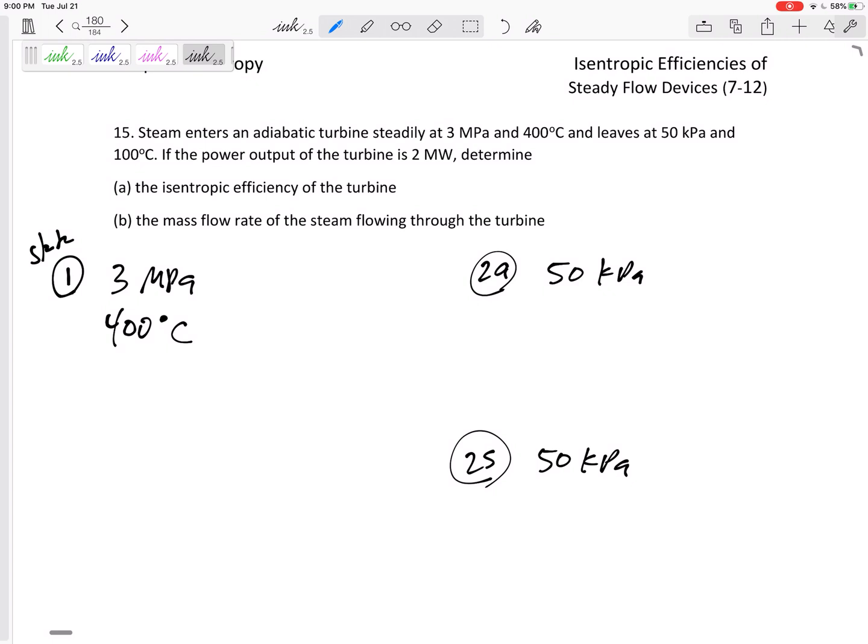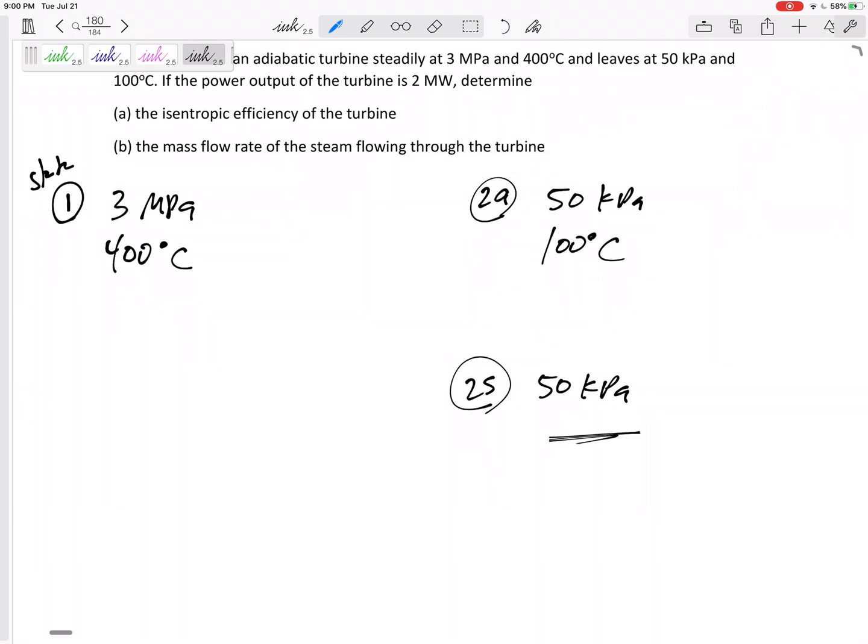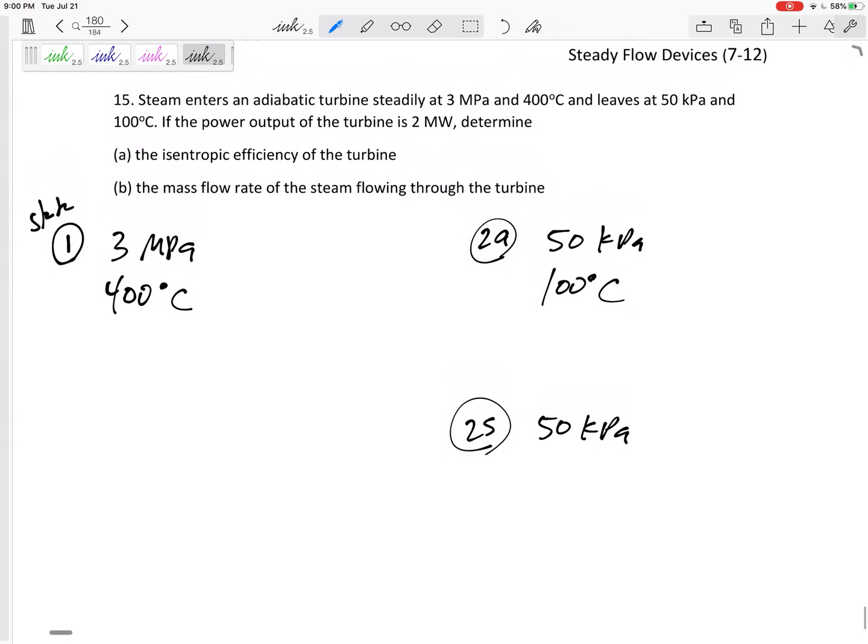But the temperature, the other properties are different. But the pressures, yes, the pressure actual and the pressure isentropic are the same. It leaves at 50 kPa and this temperature T2 actual is a hundred degrees C, but it is not a hundred degrees C right here. We don't know what it is right here.